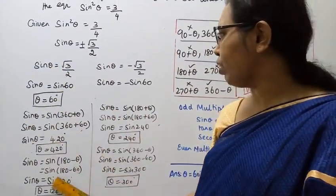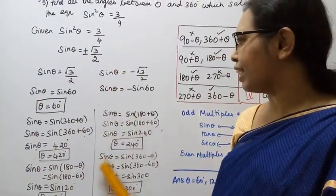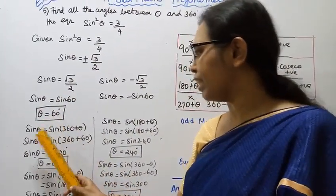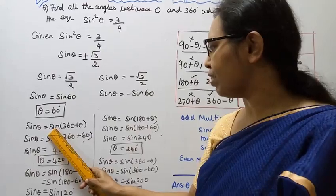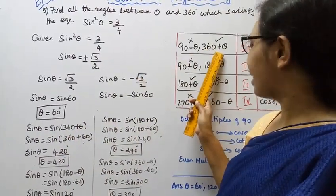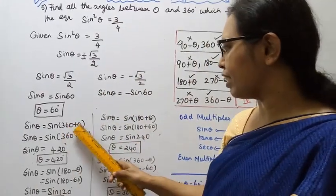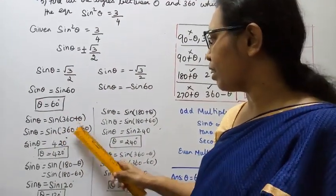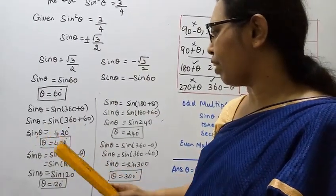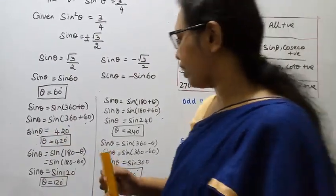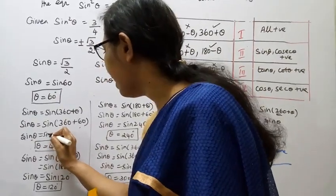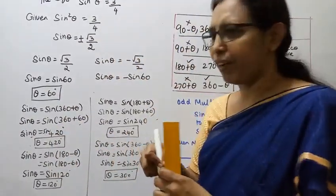For the positive case: sin theta equal to sin 60, so theta equal to 60 degrees. Also sin theta equal to sin of 360 plus 60, which gives sin 420. So theta equal to 420 degrees, but this is outside the range 0 to 360, so we discard it.